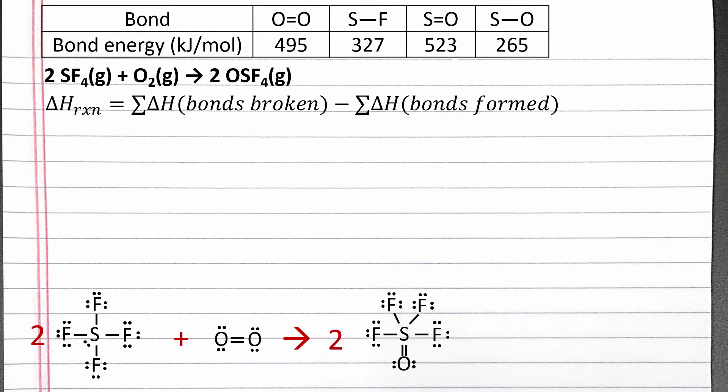In our balanced chemical equation, we have two SF4 molecules, and each SF4 has four sulfur-fluorine single bonds, so we write two SF4 times four sulfur-fluorine single bonds. We also have one oxygen gas molecule as a reactant, which has an oxygen-oxygen double bond, so we add one oxygen molecule times one oxygen-oxygen double bond.